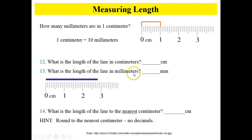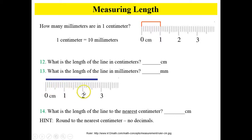What is the length of the line in millimeters? There's an easier way than counting every single one. If we know there are 10 from here to here, all we need to do is count by 10s: 10, 20. We don't go up to 30. Here's 20 — this represents 25, 26, 27, 28. The line is 28 millimeters.